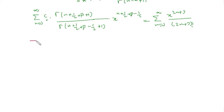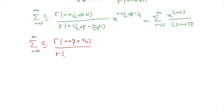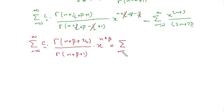After a little simplification, the left side becomes sum from n=0 to infinity of c_n times gamma(n plus beta plus 3/2) over gamma(n plus beta plus 1) times x to the power n. The 1/2 terms cancel, leaving n plus beta in the exponent. The right-hand side series remains x to the power 2n+3 over (2n+1)!.